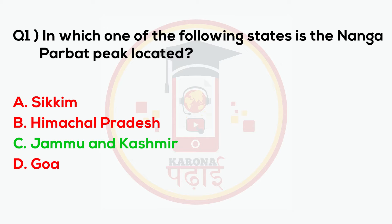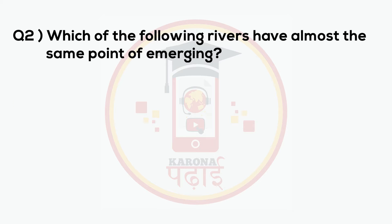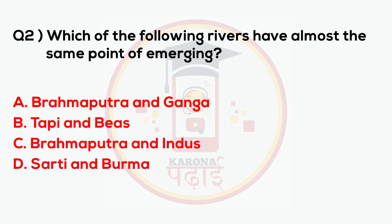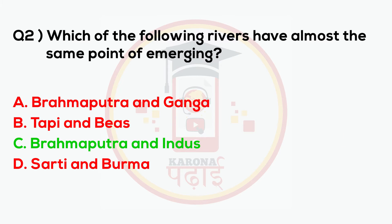Which of the following rivers has almost the same point of emerging? Brahmaputra and Indus.